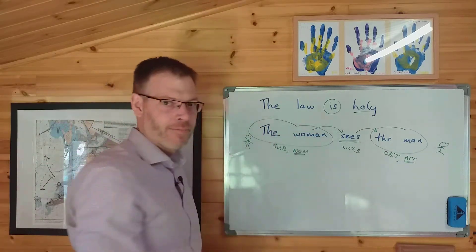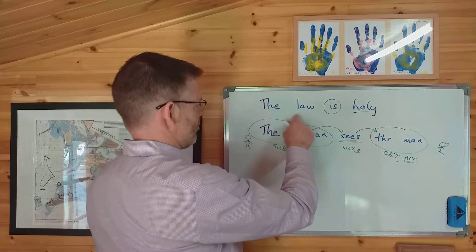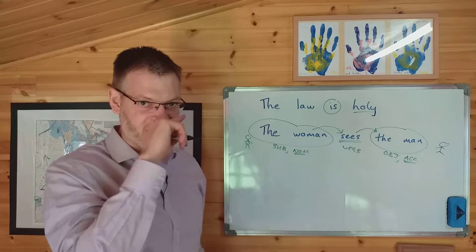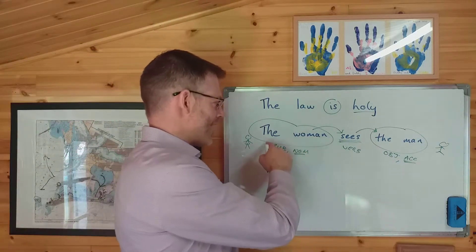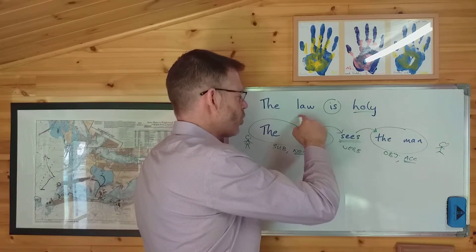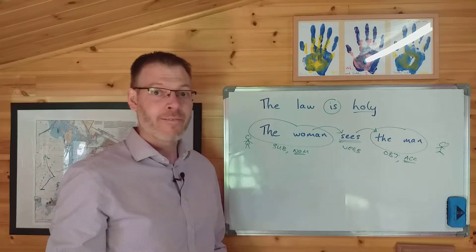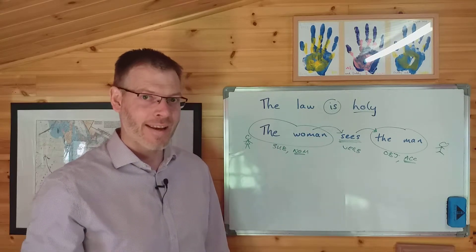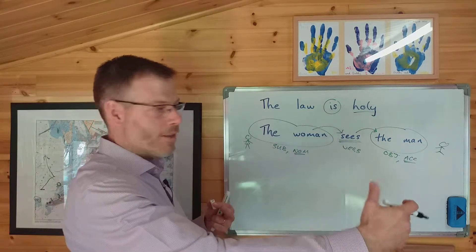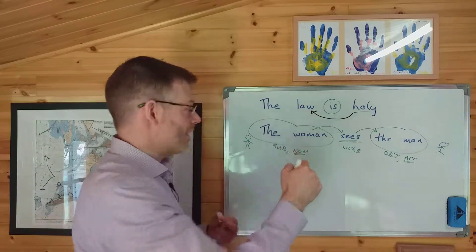Now look at this sentence. Superficially, you might think it's very similar, because you've got something, the subject, the law, you've got a verb, and then you've got something else. Oh, maybe this is the object, but hold on just a second. Whereas in this sentence, the woman is a different thing from the man, in this sentence, the law is not a different thing from holy, not in the same sense. Holy is not a separate thing. First up, holy is an adjective, not a noun anyway, and secondly, it's not a separate quality from the subject. Really, the verb to be is telling you that this is a quality of the subject.